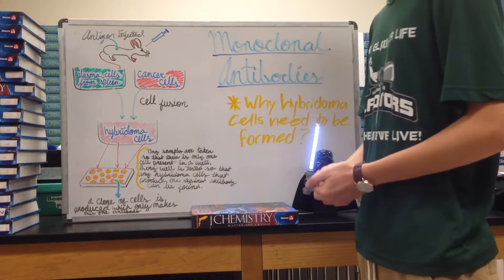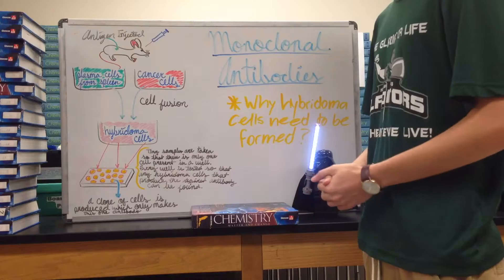In this immune response, plasma cells are created and they mature in the spleen, where they're extracted to then be fused with cancer cells to create hybridoma cells.